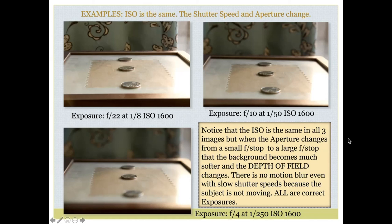As the aperture changes from a small f-stop to a large f-stop, the background becomes much softer and the depth of field changes. There is no motion blur even with the slower shutter speeds because the subject is not moving. All three of these are correct exposures.